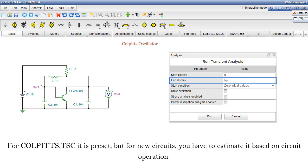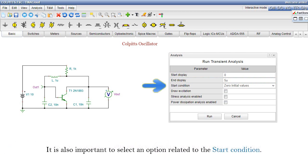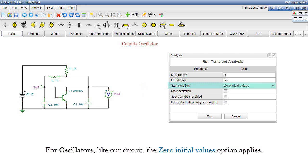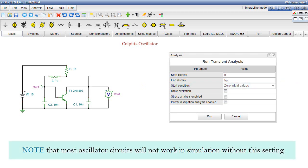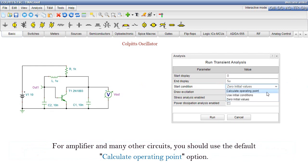For colpits.tsc, it is preset, but for new circuits, you have to estimate it based on circuit operation. It's also important to select an option related to the Start condition. For oscillators, like our circuit, the Zero Initial Values option applies. Note that most oscillator circuits will not work in simulation without this setting. For amplifier and many other circuits, you should use the default Calculate Operating Point option.